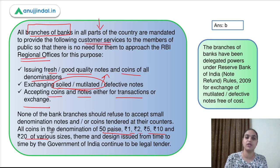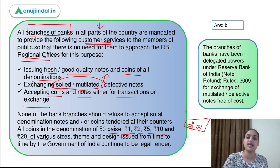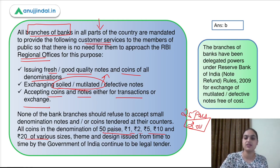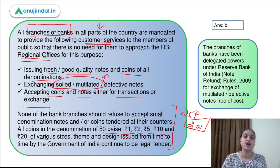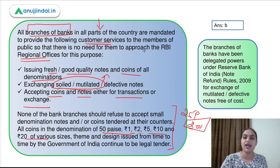Whatever denomination notes we provide — 50 paisa, 1 rupee, 2 rupee, 5, 10, or 20 rupee coins, or different denomination notes — banks need to accept them for transactions and for exchange, as long as they are legal tender. Notably, in 2011, the 25 paisa coin was taken out of legal tender, so it is no longer a legal tender. All other denominations currently in circulation must be accepted by bank branches.